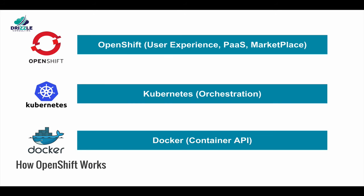OpenShift is a layer on top of Docker and Kubernetes that makes it accessible and easy for the developer to create applications, and serves as a platform of deployment for containers for both development and production workloads.